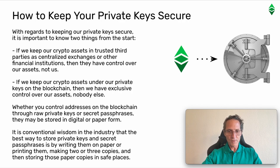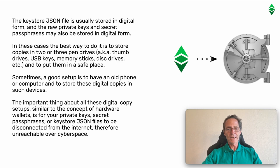Whether you control addresses on the blockchain through raw private keys or secret passphrases, they may be stored in digital or paper form. It is conventional wisdom in the industry that the best way to store private keys and secret passphrases is by writing them on paper or printing them, making two or three copies, and then storing those paper copies in safe places. The keystore.json file is usually stored in digital form, and the raw private keys and secret passphrases may also be stored in digital form. In these cases, the best way is to store copies in two or three pen drives — also known as thumb drives, USB keys, memory sticks, or disk drives — and to put them in a safe place.